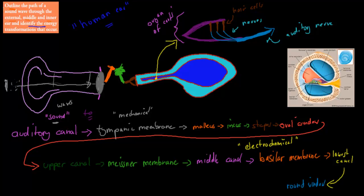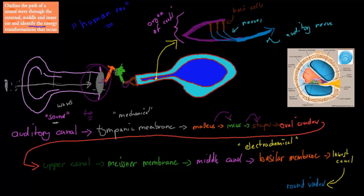The tympanic membrane will move onto the malleus. The malleus, once activated, moves onto the incus. The incus then moves onto the stapes. Here we've got movement — all of these are examples of mechanical energy. So sound to mechanical happens at the tympanic membrane, but once it changes into mechanical, it stays as mechanical because each of these steps is still mechanical energy — the movement of the bones.